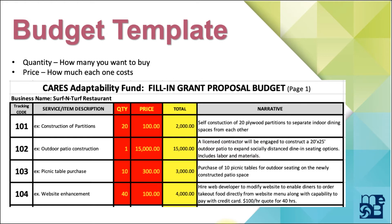The yellow area multiplies the quantity times the price and will populate automatically — you can leave the yellow area alone. Going back to tracking code 101, if you're building something yourself, please don't do a line item for nails, another for screws, another for lumber. Just combine the cost to build one and then tell us how many you're going to build.